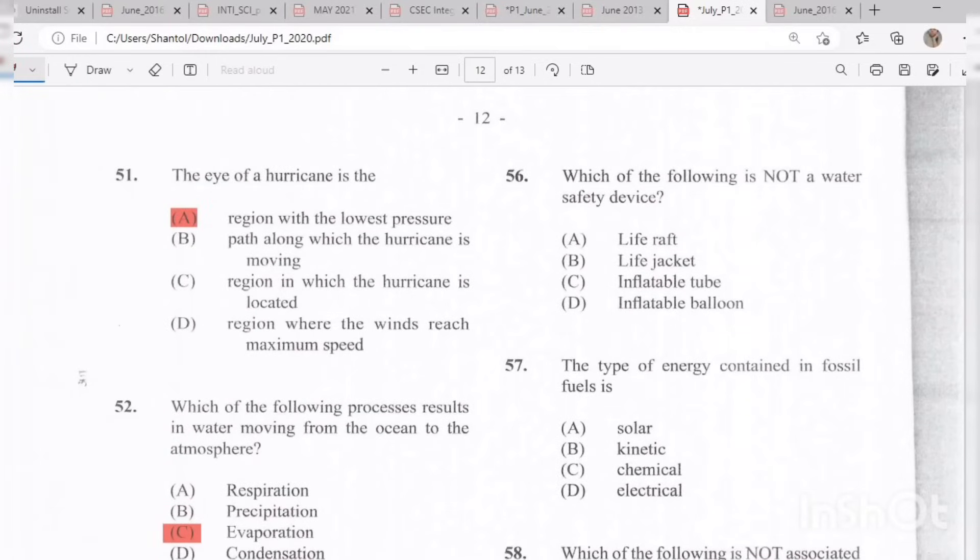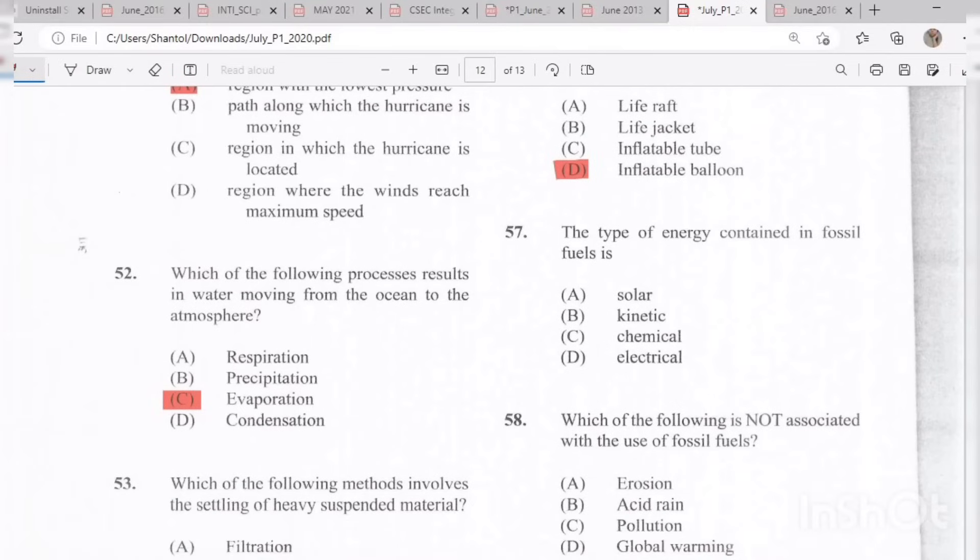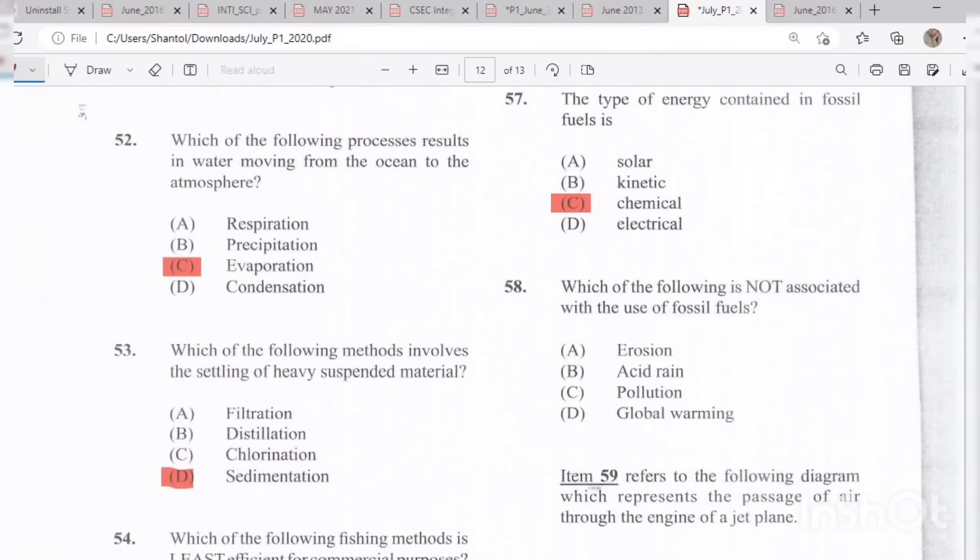Question 56: Which of the following is not a water safety device? The answer is D, an inflatable balloon. Question 57: The type of energy contained in fossil fuels is C, chemical. Question 58: Which of the following is not associated with the use of fossil fuels? The answer is A, erosion.